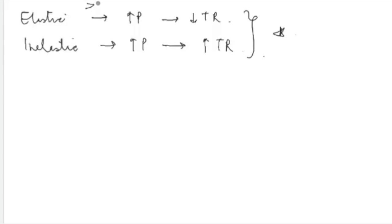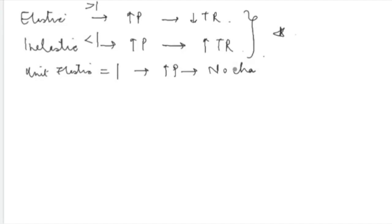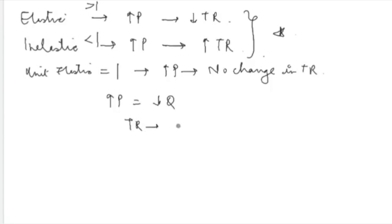Elastic means the absolute value of elasticity is greater than 1, and inelastic means the absolute value of elasticity is less than 1. Another case is when your demand curve is unit elastic — for this particular case, an increase in price will result in no change in total revenue. That is, the total revenue will stay the same, because the proportionate change in quantity exactly offsets the change in price.